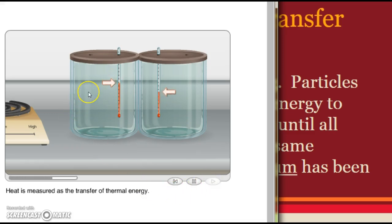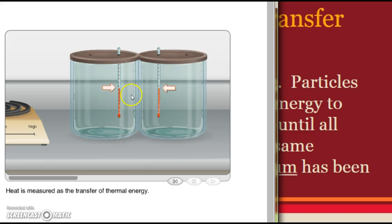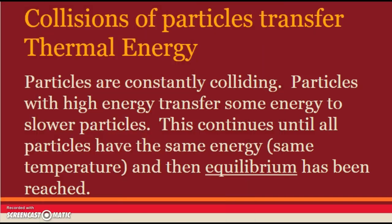Now let's look at how heat is a measurement of the transfer of energy. On the hot side, particles are moving fast; on the cooler side, particles are moving slower. Looking at the thermometer, we can see heat occurring because heat is a change of energy — one side gets cooler, the other gets warmer. They stop when they're at equal temperatures, and that word is equilibrium.